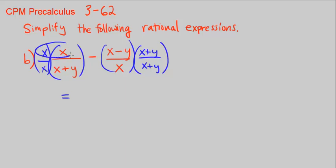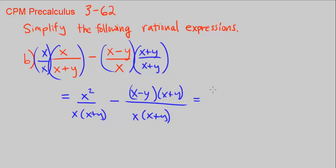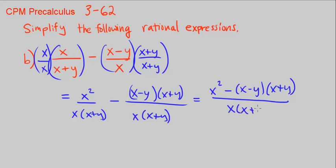When we multiply across: x times x is x squared, and the denominator is x times x plus y. Minus: in the numerator we have x minus y times x plus y, and in the denominator x times x plus y. Now we have a common denominator, so we can combine the numerators: x squared minus x minus y times x plus y, all divided by x times x plus y.